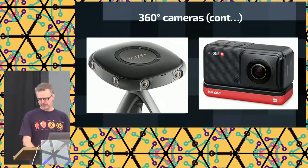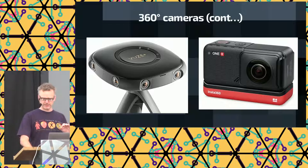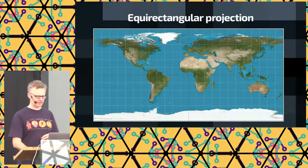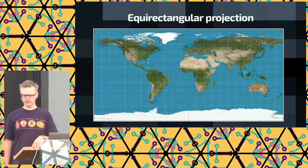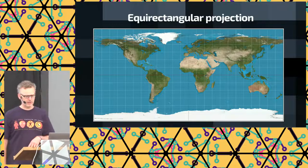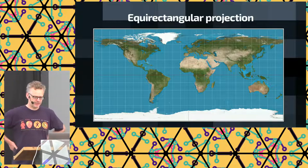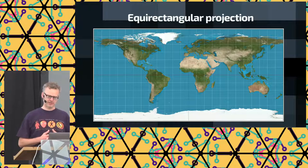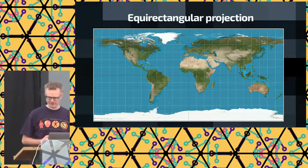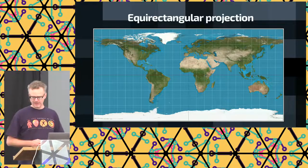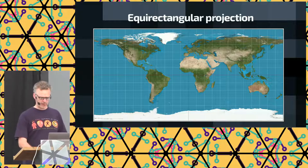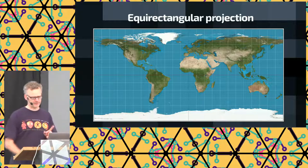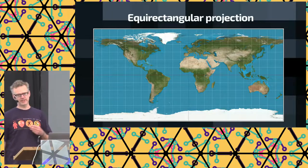These cameras use fisheye lenses and we have to turn the image into one coherent picture. You're probably familiar with this view of the globe — it's called an equirectangular projection, and basically it projects a sphere onto a plane. You can also do a 360 camera broadcast and just transmit a normal video by choosing a small part of the image — that's called reframing.